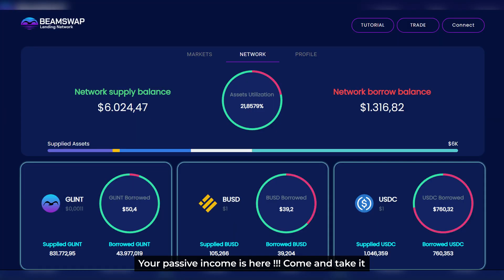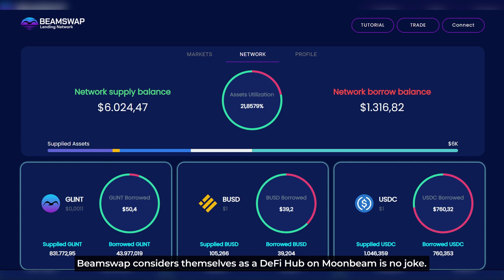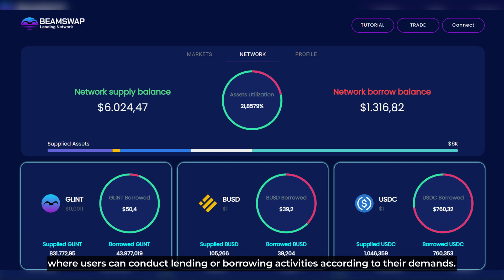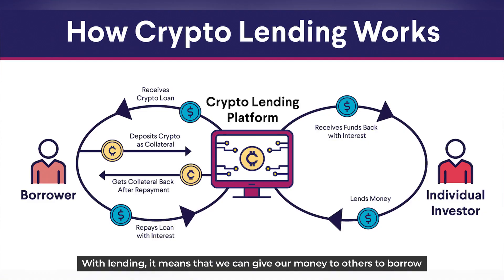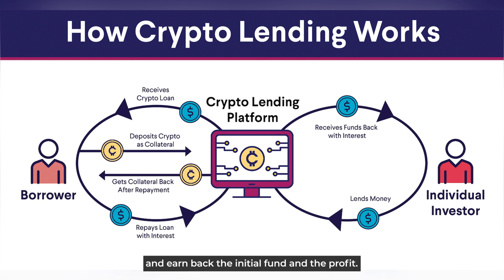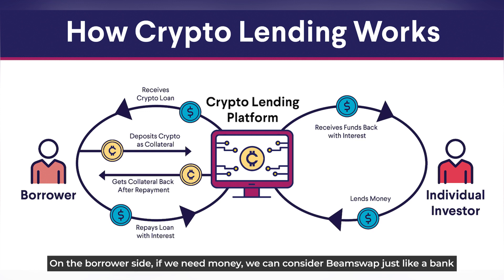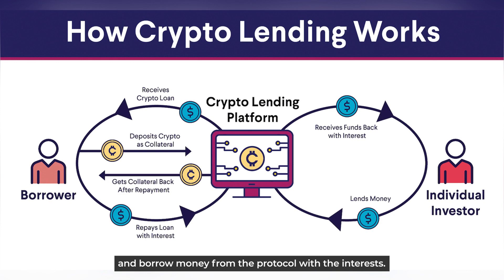The last feature of the Earn section is Lending and Borrowing services. BeamSwap considers itself a DeFi hub on Moonbeam, and they have already built their own in-house lending protocol where users can conduct lending and borrowing activities according to their demands. With lending, we can give our money to others to borrow and earn back the initial fund plus profit. On the borrower side, if we need money, we can treat BeamSwap like a bank — deposit some assets for collateralization and borrow money from the protocol with interest.